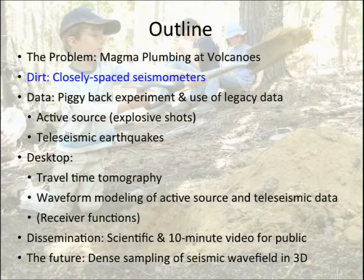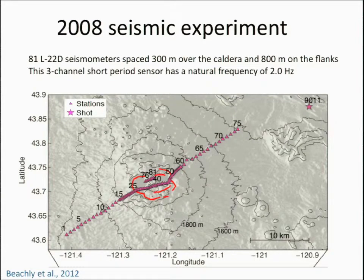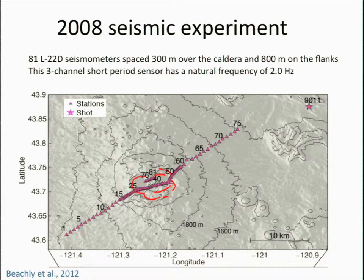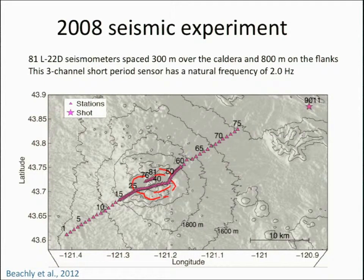One way to address this problem is to install closely spaced seismometers. We did a seismic experiment in 2008 and deployed 81 L22 seismometers from PASSCAL, spaced 300 meters apart over the top and upper flanks of the volcano, and 800 meters apart on the flanks. You can see the outline of the caldera faults shown in red on the topographic map. The sensor is a three-component sensor with a natural frequency of two hertz. The shot is number 9013 and was actually a piggyback experiment on the High Lava Plains experiment, so the location of that shot governed the orientation of our line.